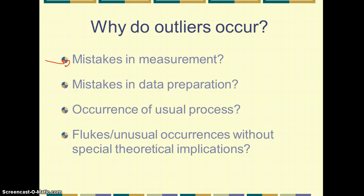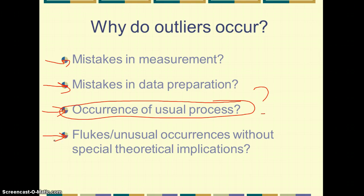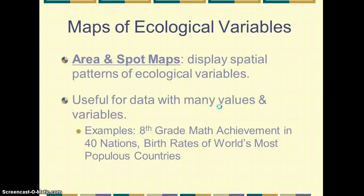So why do outliers occur? Well, it could be a mistake in measurement. Maybe there was just something wrong with the way that we were measuring the data for Mexico. Or it could be a mistake in the data preparation. After we collected the data, somebody typed in the wrong number on a spreadsheet. Sounds silly, but it happens. What might be more likely, especially since we see Mexico consistently occurring as an outlier in that data, is that there's some usual process that happens in Mexico that doesn't happen in other countries. And this is something that we simply don't know about. We haven't accounted for it somehow. It could also be a fluke or an unusual occurrence without any special theoretical implications. Although, in our example here with Mexico, I'm more likely to go with the occurrences of usual processes that are unique to Mexico.